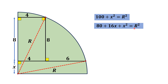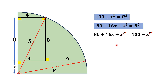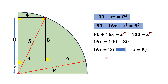Now we have these two equations. Since each equation is equal to R², we can equate them: 80 + 16x + x² = 100 + x². The x² terms cancel on both sides, giving 16x = 100 − 80, so 16x = 20. Dividing both sides by 16, we get x = 5/4.